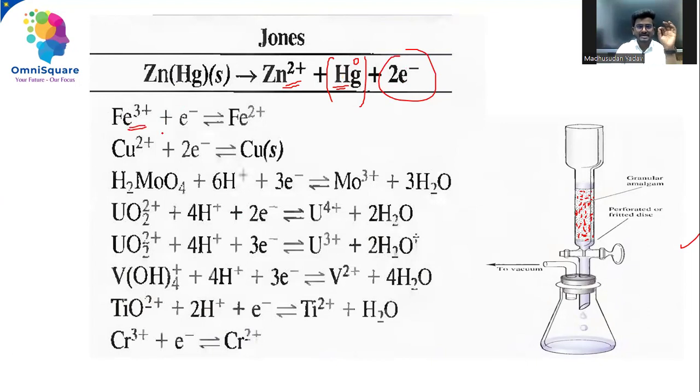Iron plus three is changing into iron plus two. Copper plus two is changing by absorbing those two electrons which are coming from the Jones reductor, converting copper plus two to copper zero. Here manganese is in plus six oxidation state, converting into manganese plus three. Here uranium is in plus four or plus six oxidation state, converted to plus three oxidation state.